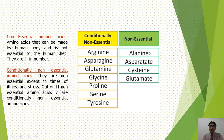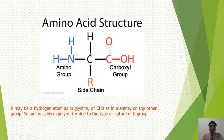ये 7 amino acids illness या stress में body prepare नहीं करेगी, बाकी conditions में हमारी body इन amino acids को synthesize कर लेती है। और 4 amino acids - Alanine, Aspartate, Cysteine और Glutamine - इन्हें हमारी body हर condition में synthesize कर लेती है। इन सब को हम non-essential भी कह सकते हैं। Next हम study करेंगे structure of amino acids।